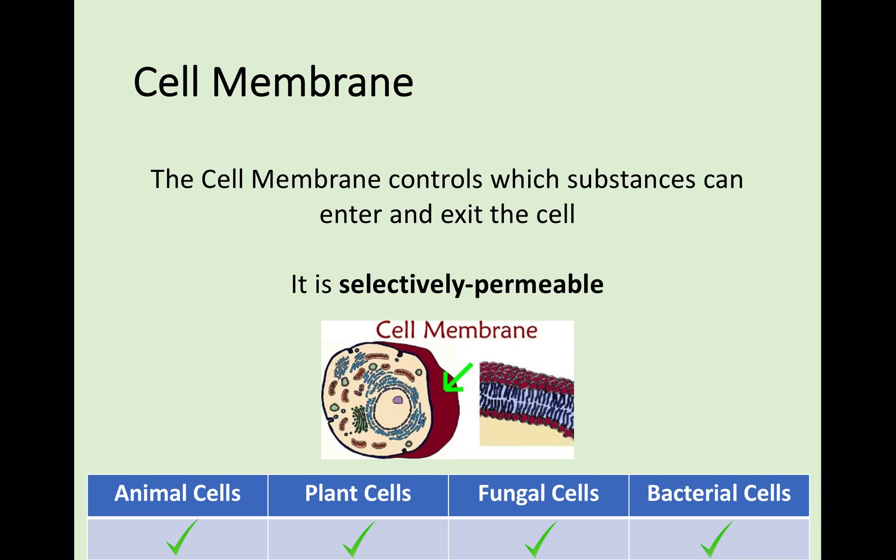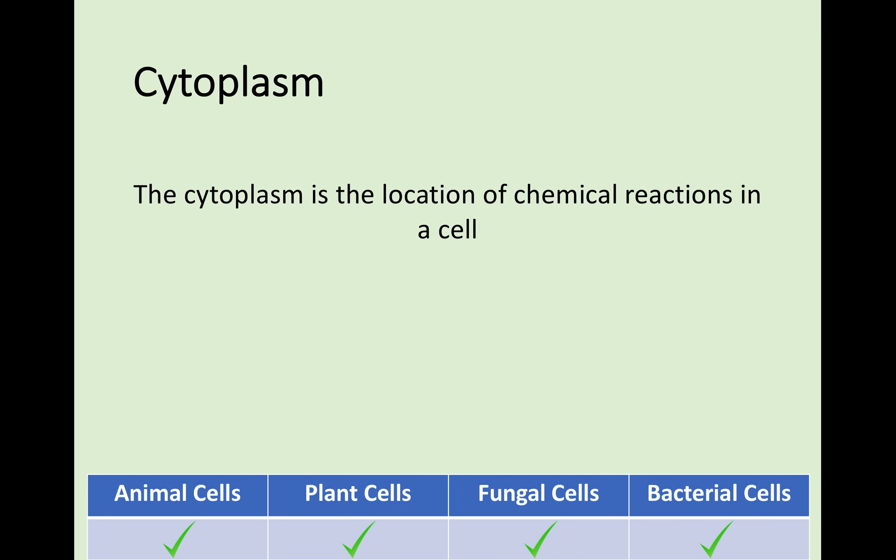Next is the cell membrane. The cell membrane is different from the cell wall in that it is selectively permeable. That means that some substances can come through the cell membrane but some can't. It is found in all four types of cell that we have looked at. Something else that is found in all four cells is a cytoplasm. This jelly-like substance found between all the different cell organelles is the location of chemical reactions within a cell. There are lots of reactions that take place and they all take place in the cytoplasm.